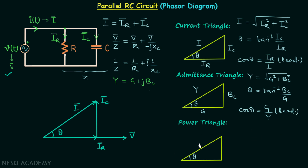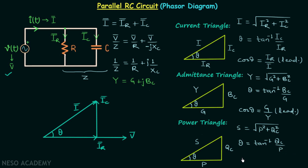Moving on to the power triangle: one side is apparent power, one side is reactive power due to the capacitor, and one side is real power. Apparent power equals the square root of (real power² + reactive power²). The angle theta equals tan⁻¹(QC / P), and the power factor cos theta equals real power over apparent power — and it will be leading.